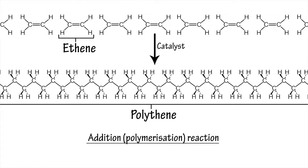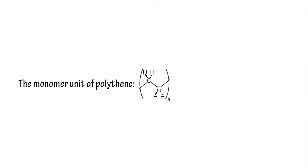Polythene is commonly known as plastic, or more accurately as a thermoplastic polymer. It is a polymer because it is made up of many individual units, or monomers, linked together in a repeating pattern. The exact number of monomer units in a strand of polythene can vary, but typically numbers in the thousands or tens of thousands.